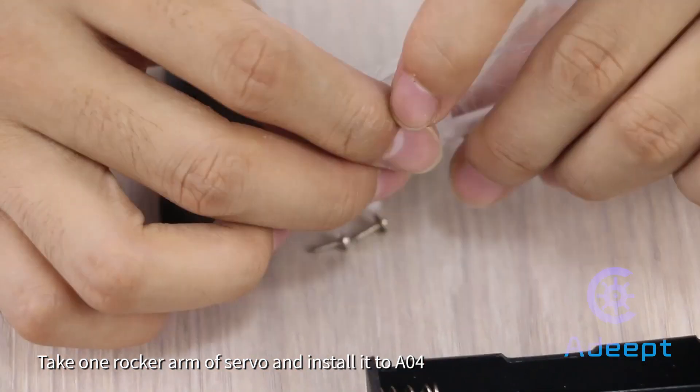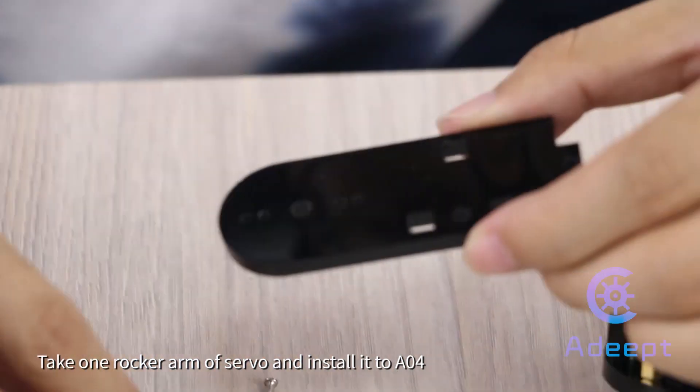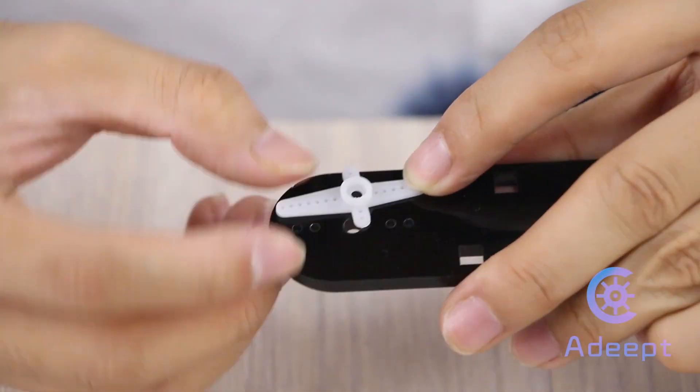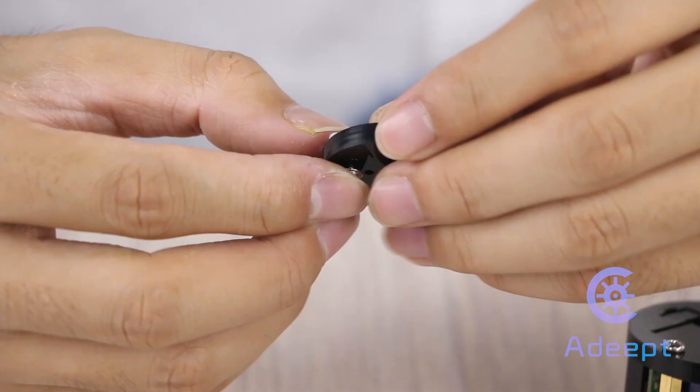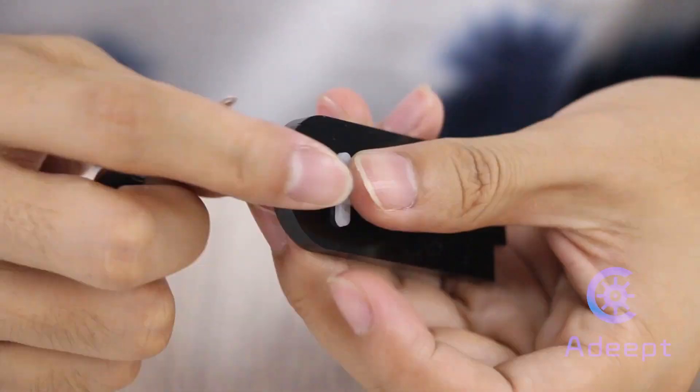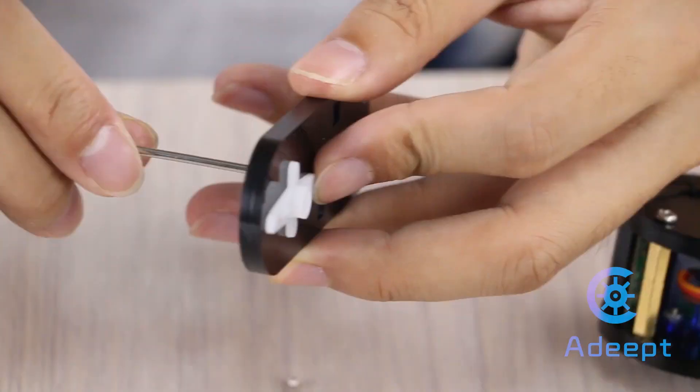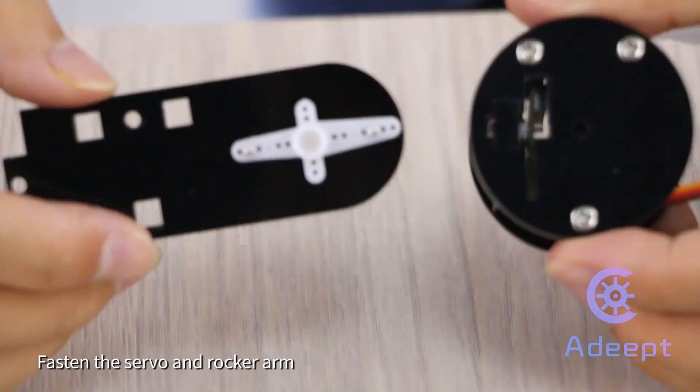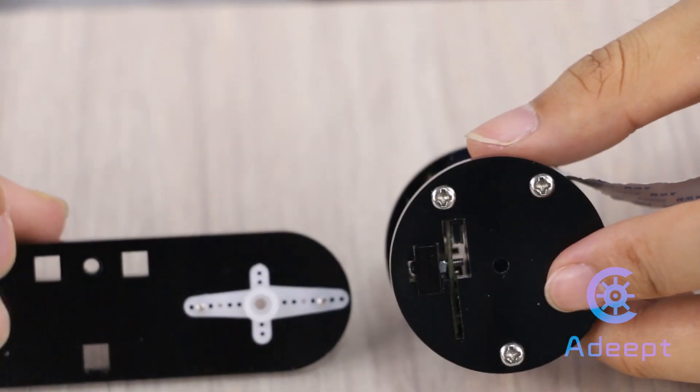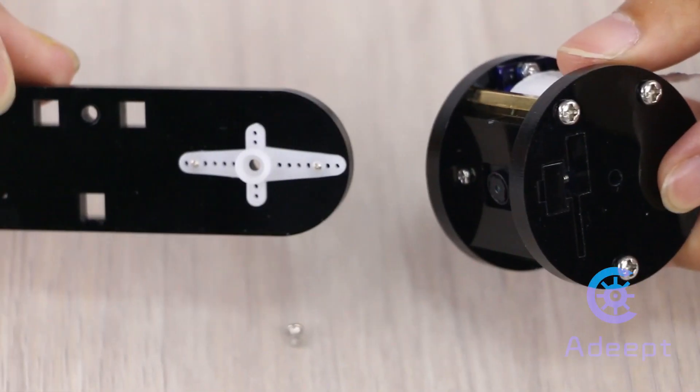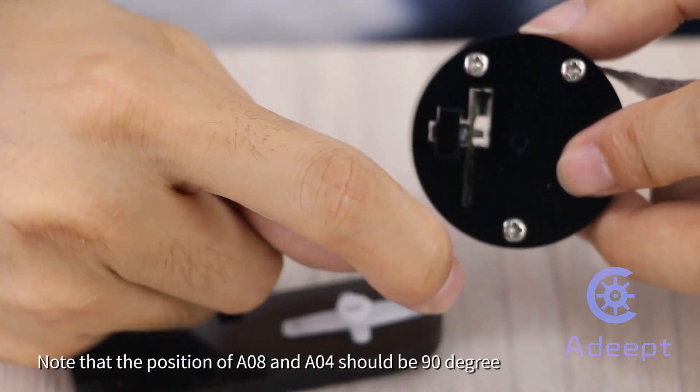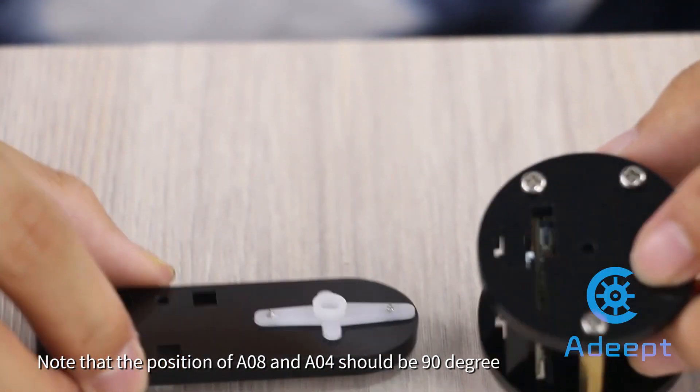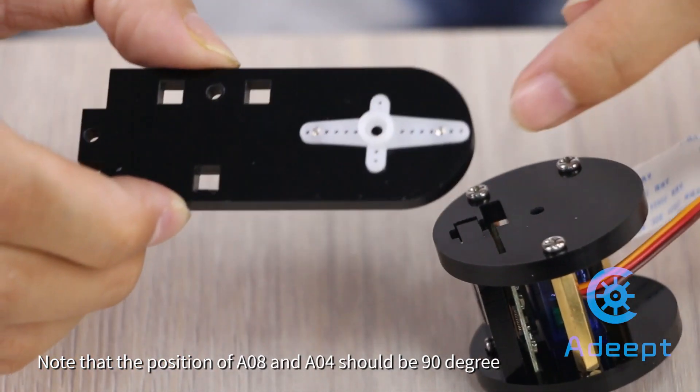Take one rocker arm of servo and install it to the end. Fasten the servo and rocker arm. Note that the position of A08 and A04 should be 90 degrees.